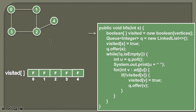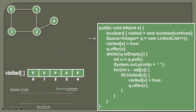Moving ahead, we then create a queue data structure. This queue will help us traverse the nodes of the graph level by level. It is simply a FIFO data structure where the element inserted first will be first to be removed.